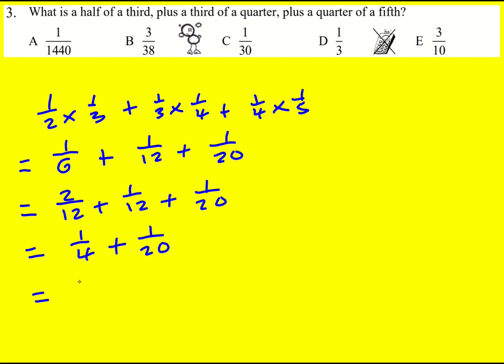And again now, 4 goes into 20, so I can just times top and bottom by 5, which is going to give me 6 over 20 or 3 over 10.